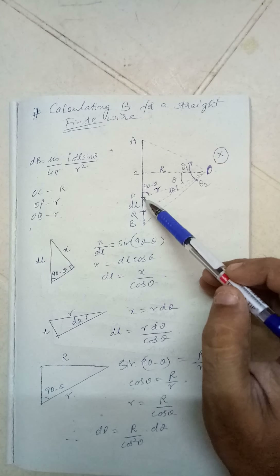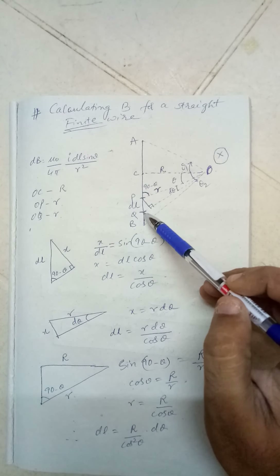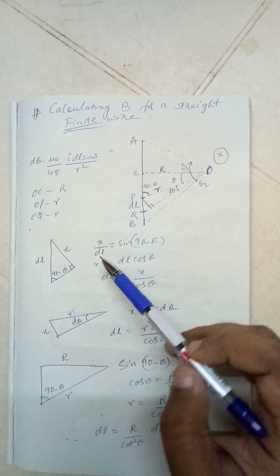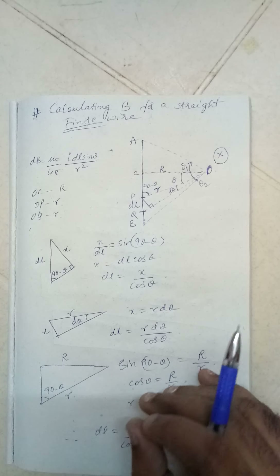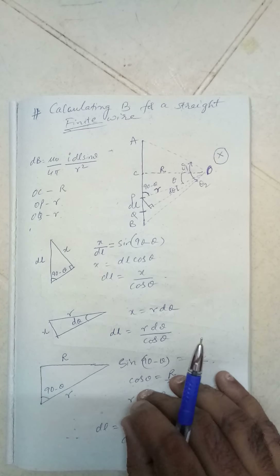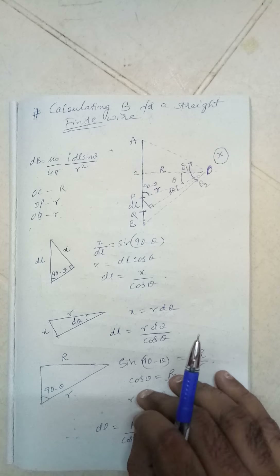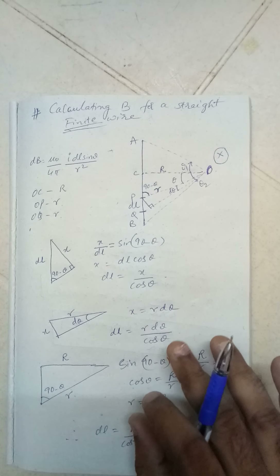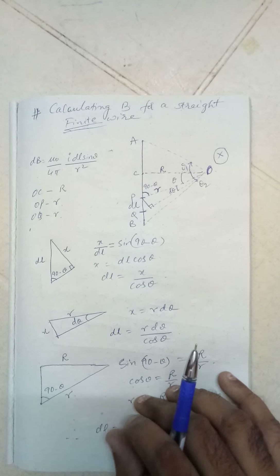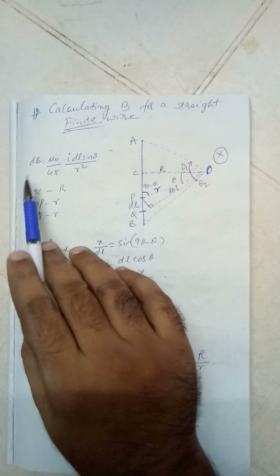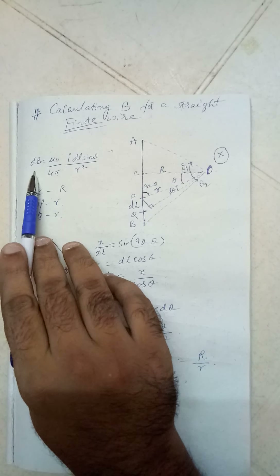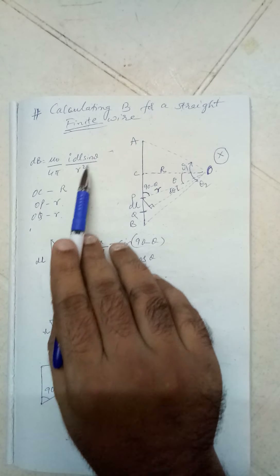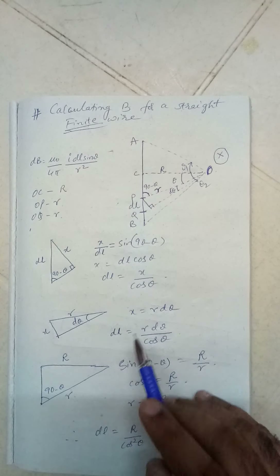To apply Biot-Savart's law, to calculate the dB value of the small element — a very very small length, say 0.001 meters — dB can be given as: mu naught by 4 pi, times I dl sine theta, divided by r squared.